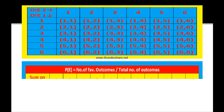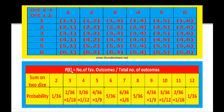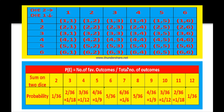In order to find the probability, the formula is: probability of an event equals number of favorable outcomes divided by total number of outcomes. Here, the sum on two dice should be 2. In order to get a sum of 2, there is only one ordered pair — 1 plus 1 equals 2 — and there is no other ordered pair whose sum is 2.